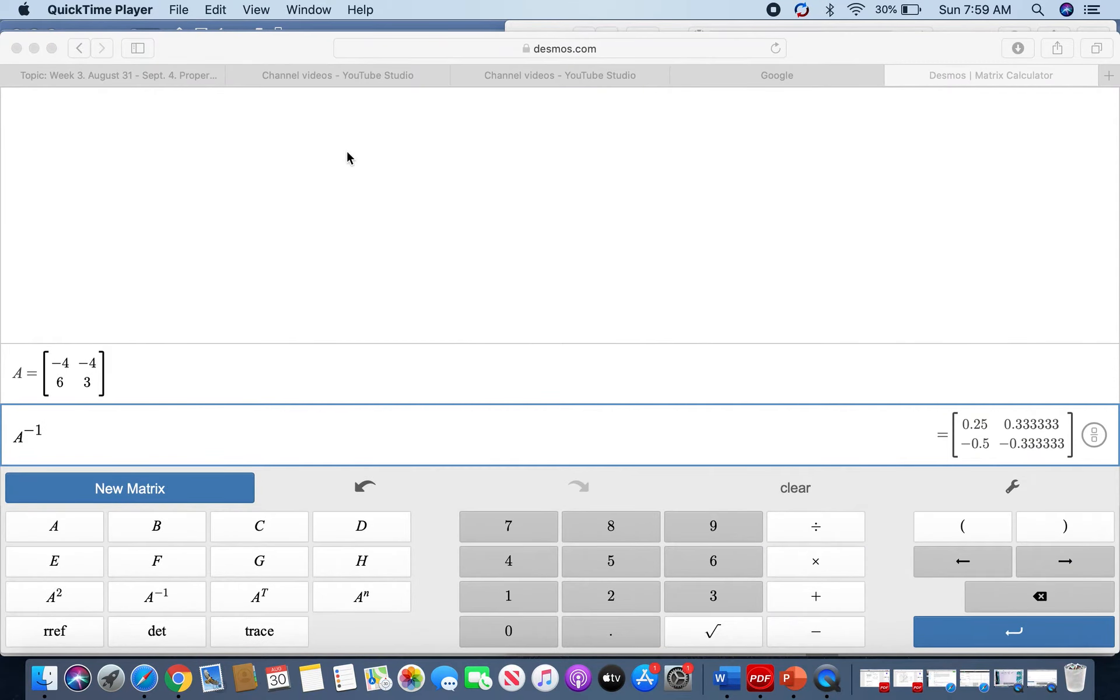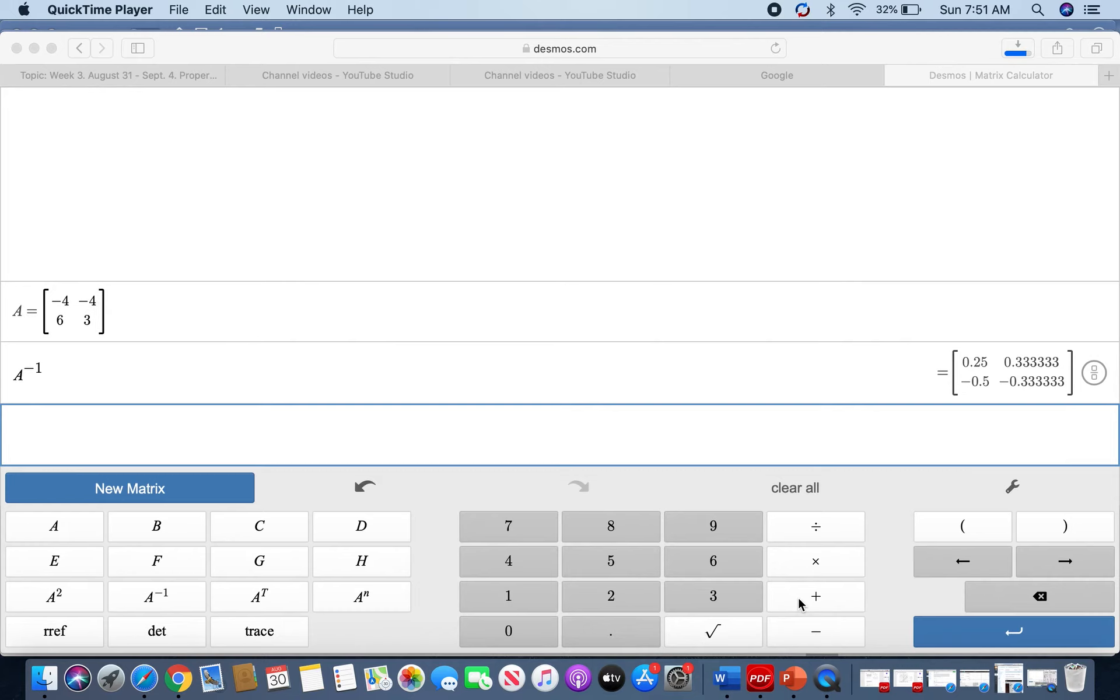Also, there is a property that says that the product of the matrix and its inverse should be equivalent to its identity matrix. Let's see if that happens. So we will multiply A times its inverse. And as you can see, the product is an identity matrix.